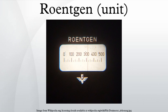Not to be confused with Röntgen-equivalent man or Röntgen-equivalent physical, the Röntgen is a legacy unit of measurement for the exposure of X-rays and gamma rays up to several MeV electron volts. It is a measure of the ionization produced in air by X-rays or gamma radiation, and it is used because air ionization can be measured directly.